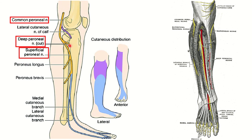We can see this division point on the diagram. Here is the fibula, and here is the tibia. We can see the head of the fibula, and just below the head there is the neck of the fibula. At the point of the neck of the fibula, the common peroneal nerve divides into the superficial peroneal nerve and the deep peroneal nerve.